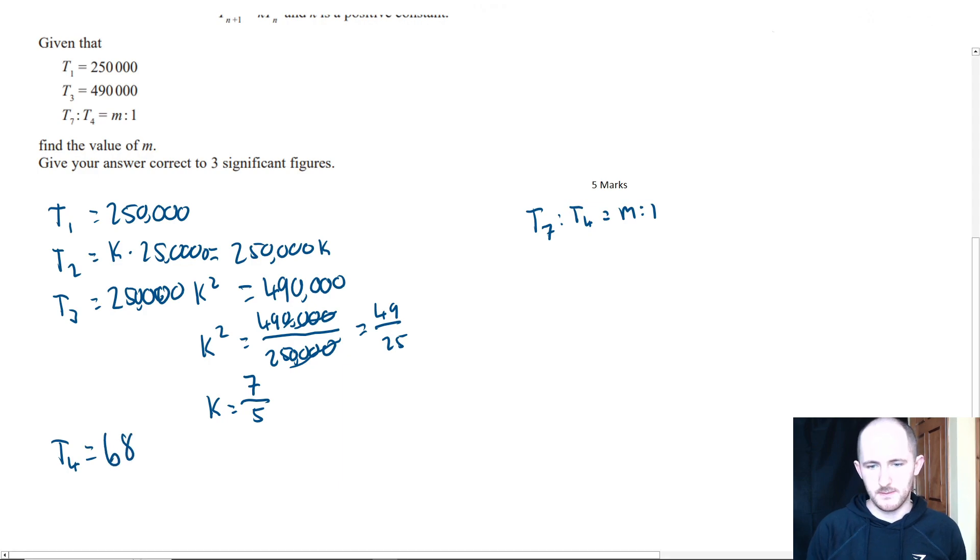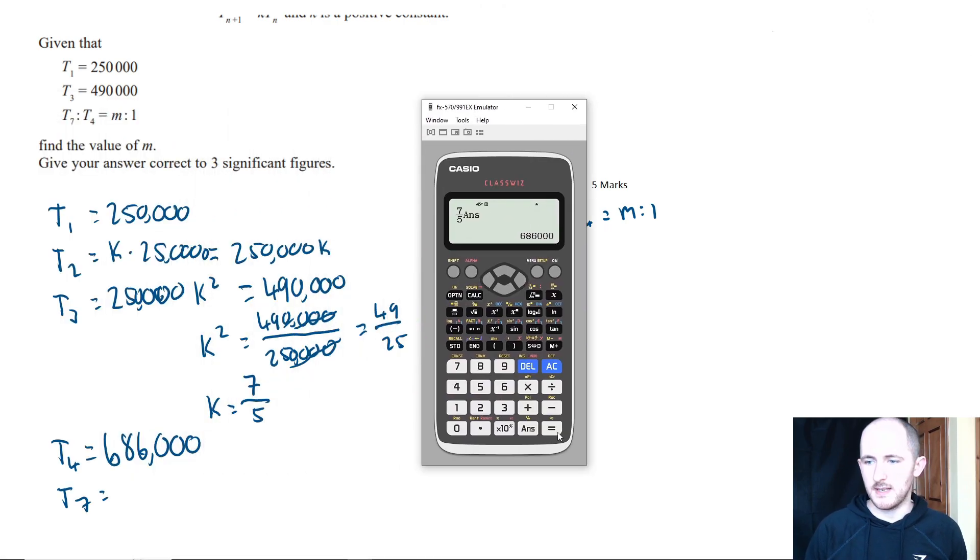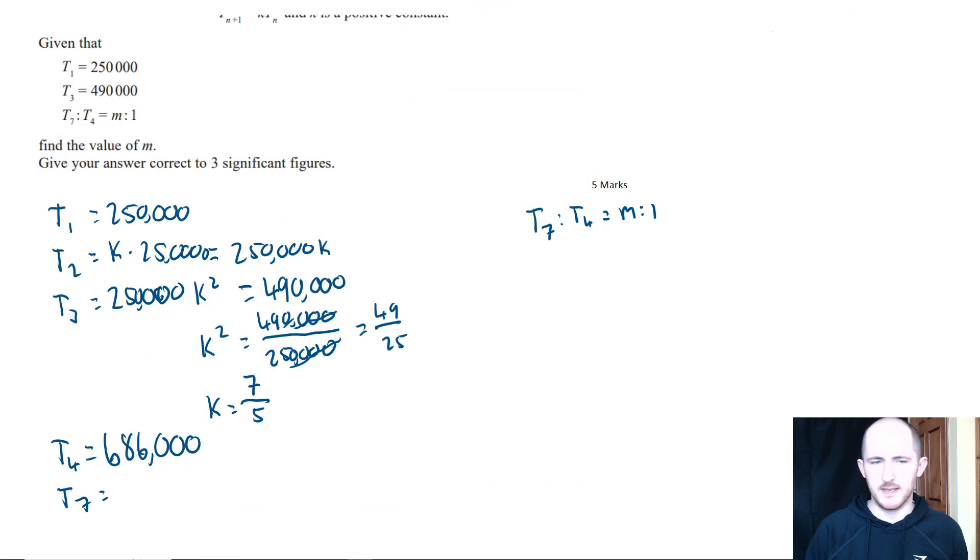Then for t_7, we're just going to press it a few more times, so t_5, t_6, t_7, and that is 1.8 million.